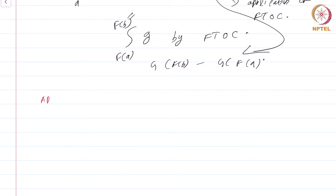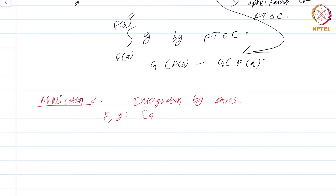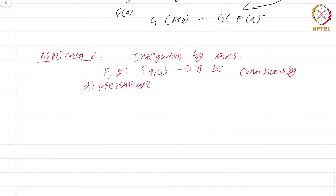Application two is one of the most powerful methods of integration that you have no doubt extensively studied in high school. This is called integration by parts. Let f, g from [a,b] to ℝ be continuously differentiable. What you are interested in is integrating f · g' from a to b.